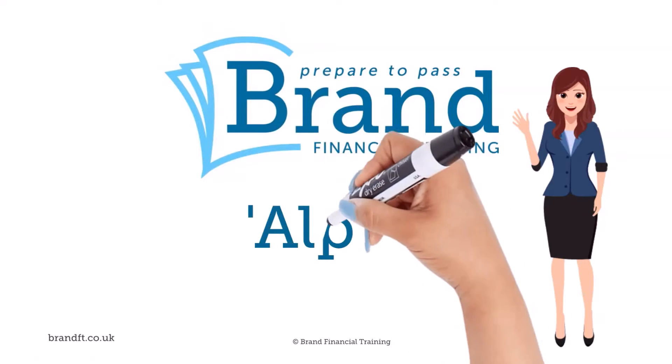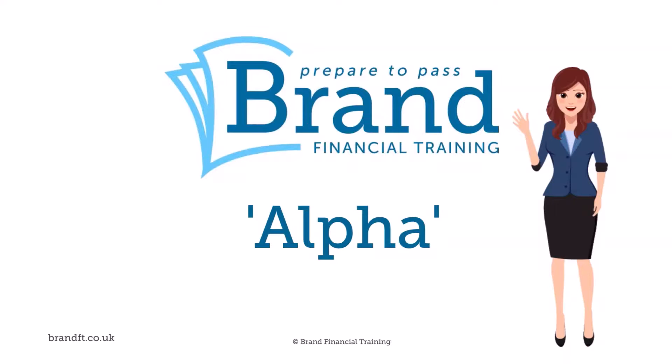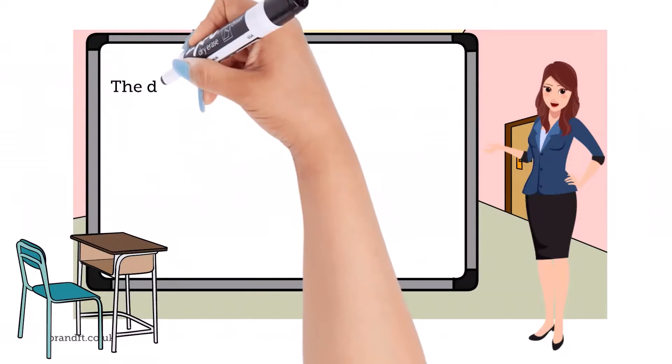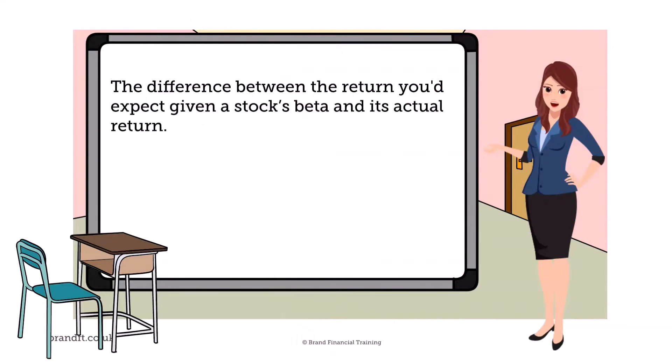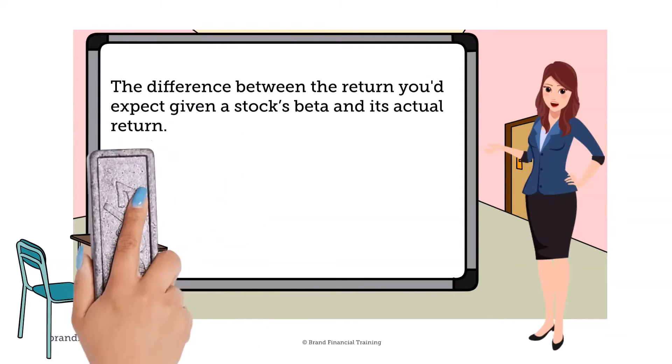In this bite-sized video, we're going to look at alpha. Alpha is a measure of the difference between the return you'd expect given a stock's beta, its volatility relative to the market, and its actual return.